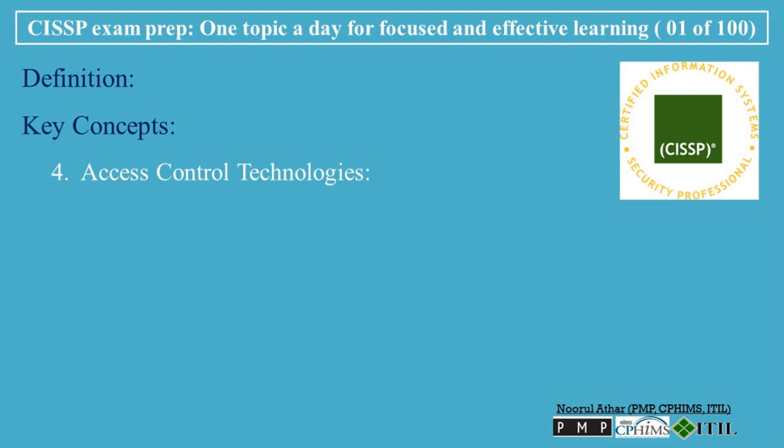4. Access Control Technologies. Access Control Lists (ACL) is a list of permissions attached to an object, specifying which users or system processes can access the object and what operations they can perform.